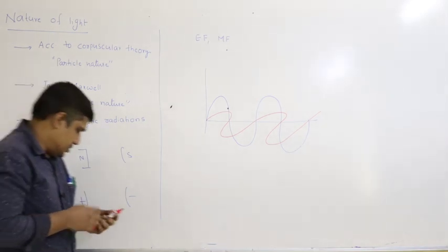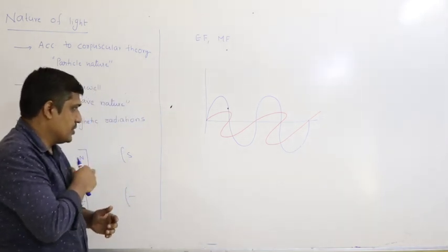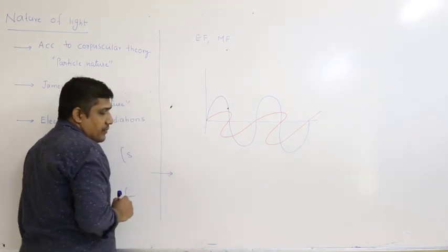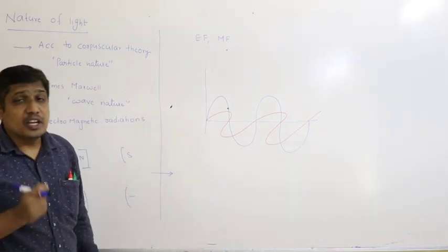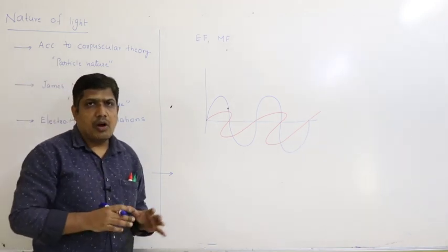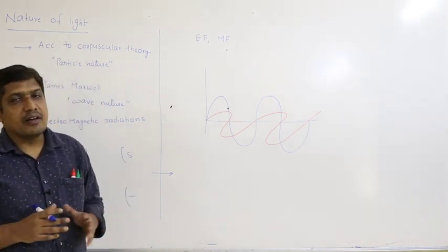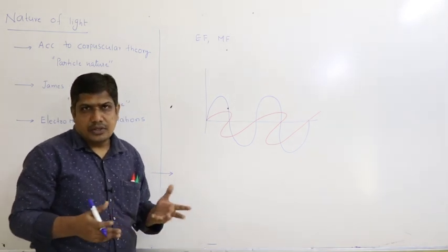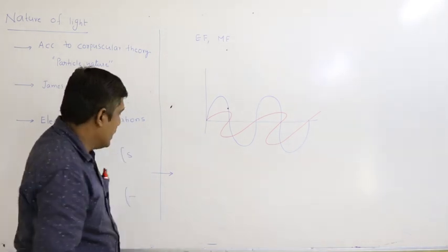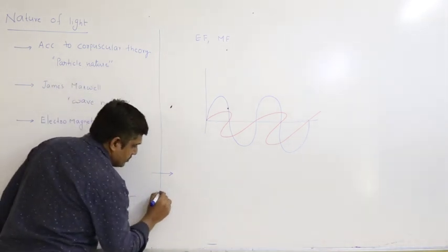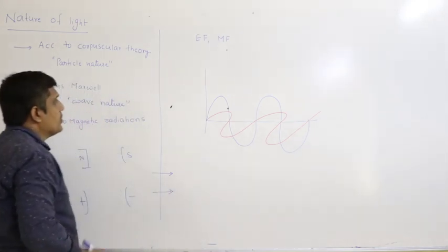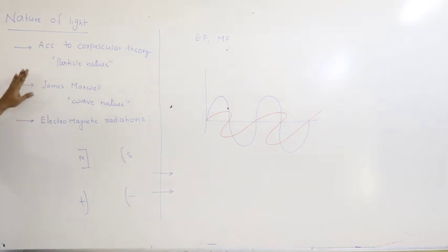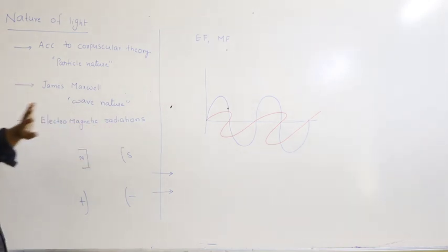Light is also an electromagnetic radiation. All electromagnetic radiations travel with the same velocity equal to that of light, because they do not require any medium. These are the key points about electromagnetic radiation.